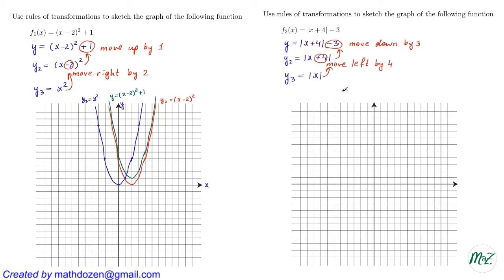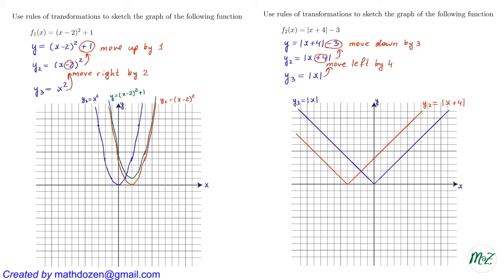Removing the plus 4 gives the simple function y3 = |x|. To go from y3 to y2, we move left by 4 units. Plotting y3 gives the V-shaped graph of absolute value of x. Shifting that left by 4 units gives the red graph of |x + 4|, and then moving it down by 3 units gives the green graph, which is the original function y = |x + 4| - 3.